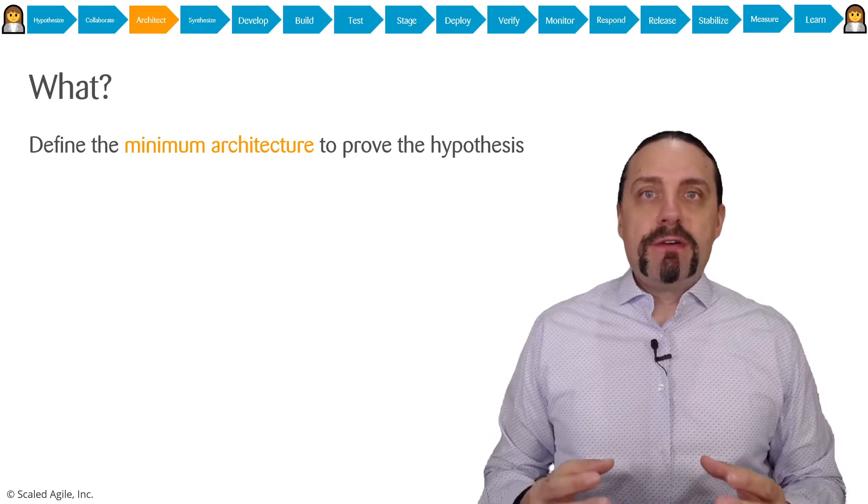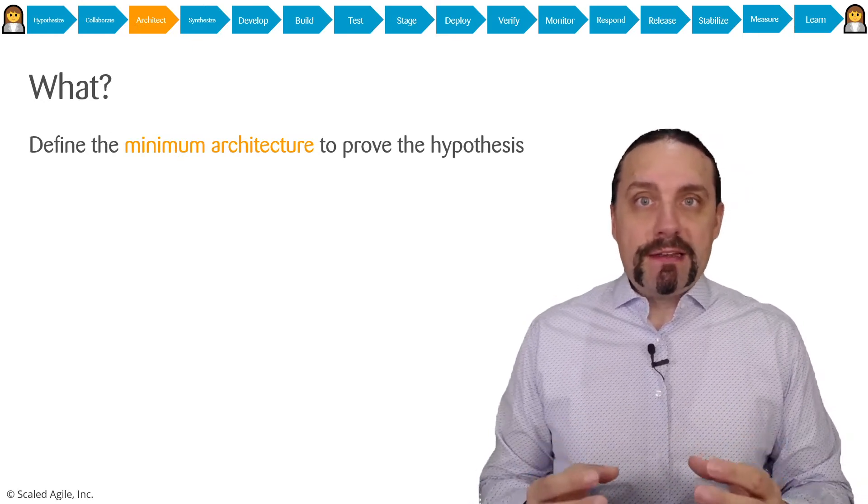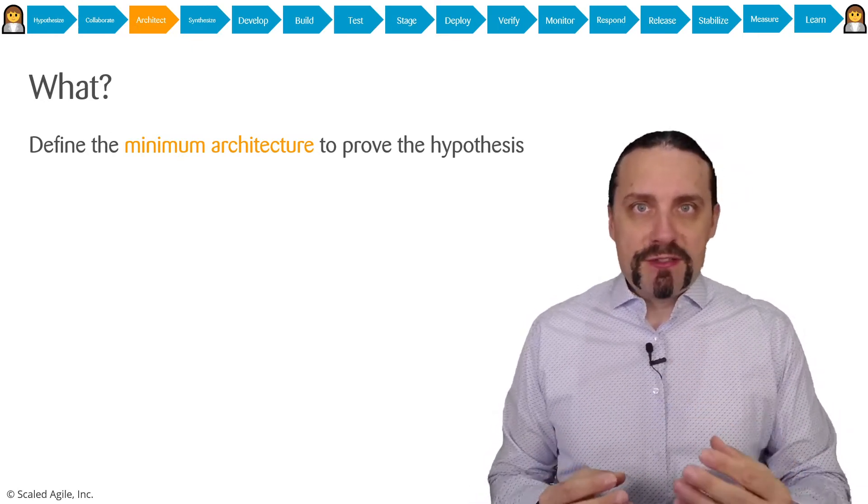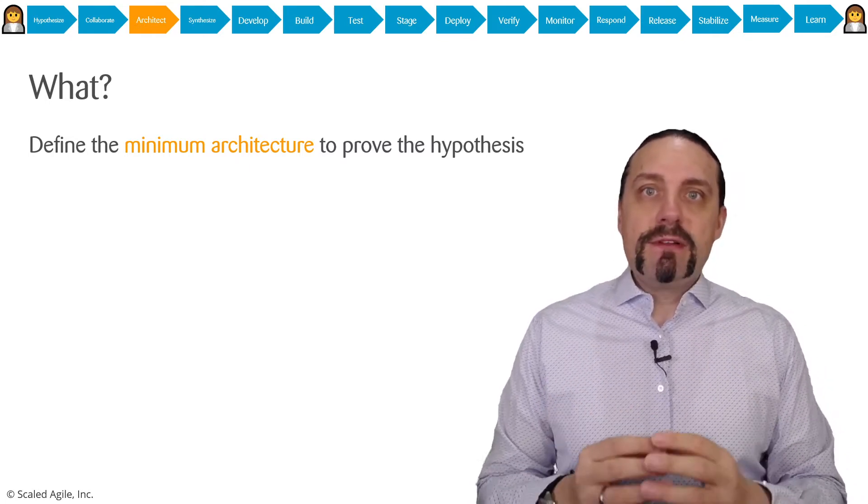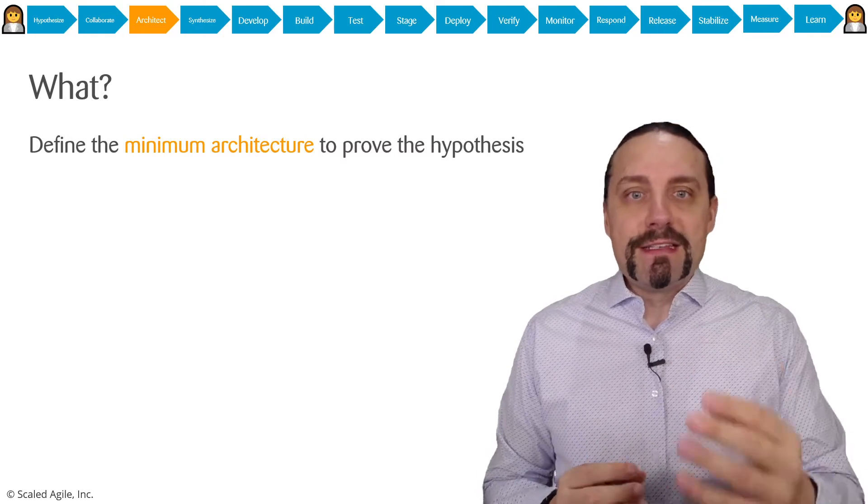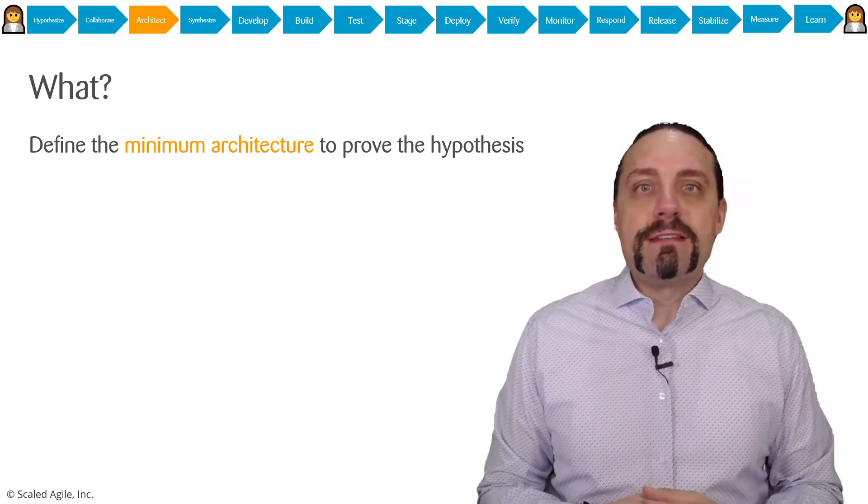In the architect step we take these epics with the hypothesis statement and define the minimal architecture which is needed to prove this hypothesis.